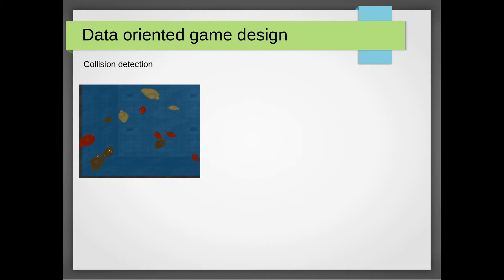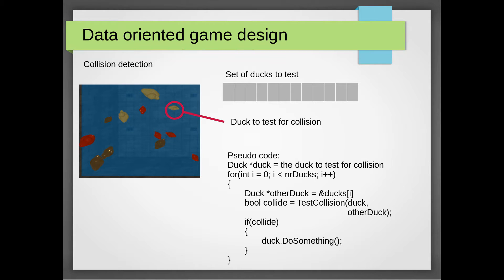In our asteroid game we will need to consider a set of ducks that can collide with another duck in the game. With a classic object-oriented design we might have a solution that looks something like this. We iterate through all the ducks that we can collide with and perform a collision check and if a duck did collide we ask it to do something.